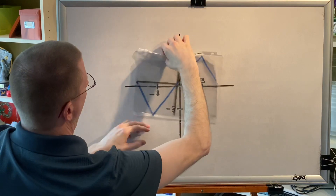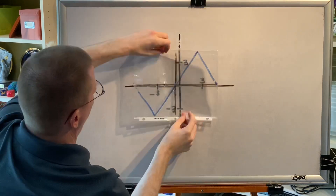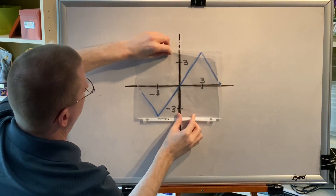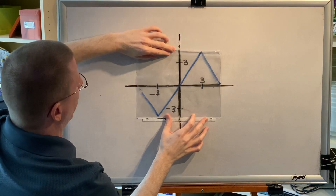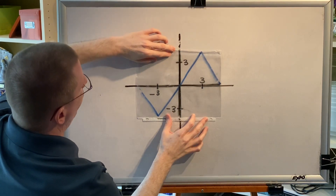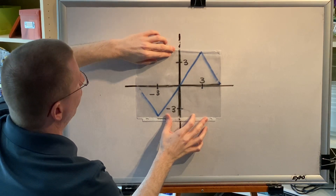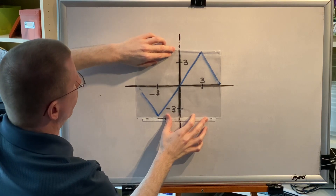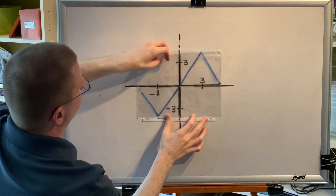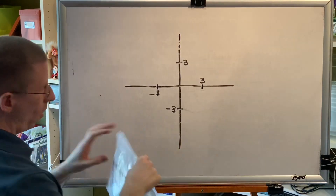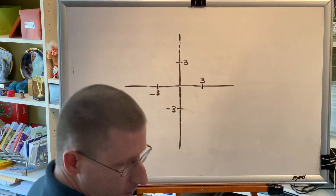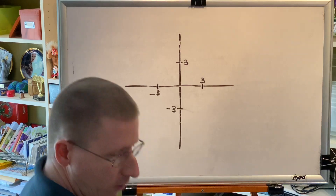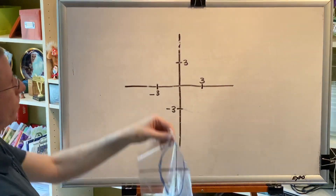Before, after — same picture. Therefore this graph has origin symmetry. Now let's look at another graph: a circle.